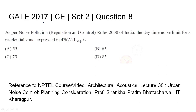GATE 2017 Civil Engineering Set 2, Question 8. As per Noise Pollution Regulation and Control Rules 2000 of India, the daytime noise limit for a residential zone expressed in decibels for equivalent loudness is — the four options given are: A) 55, B) 65, C) 75, and D) 85. The relevant NPTEL reference has been mentioned.